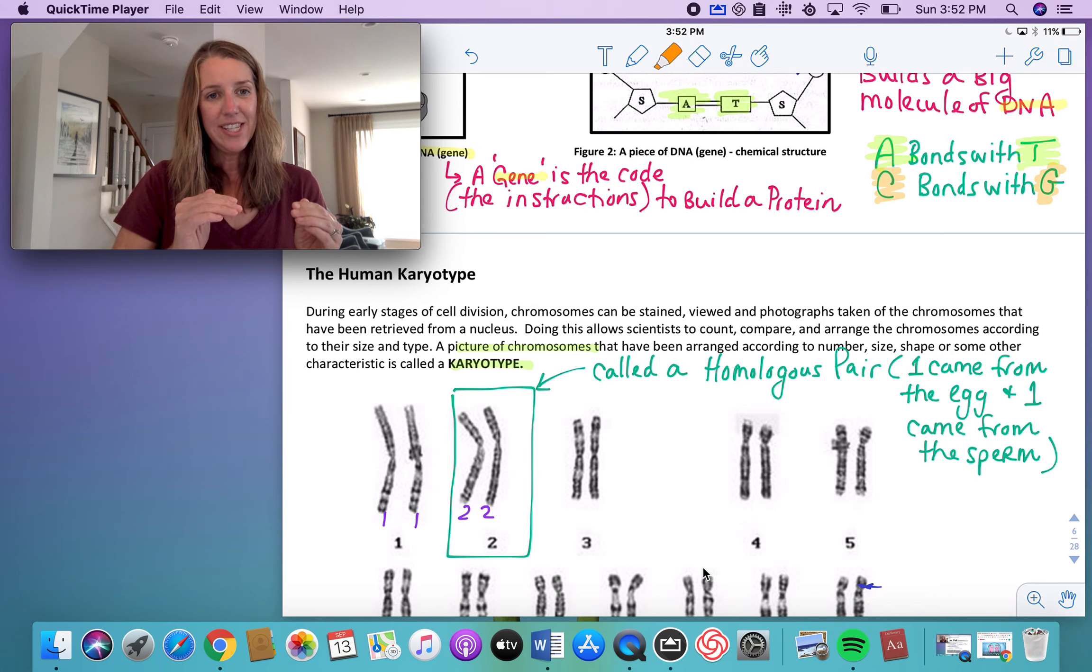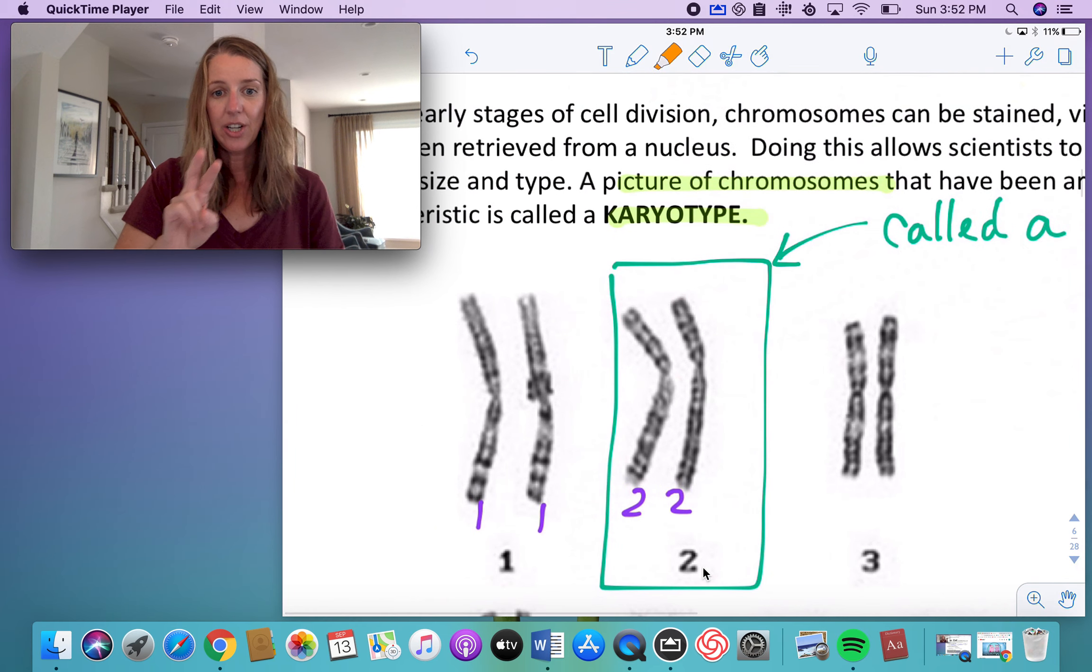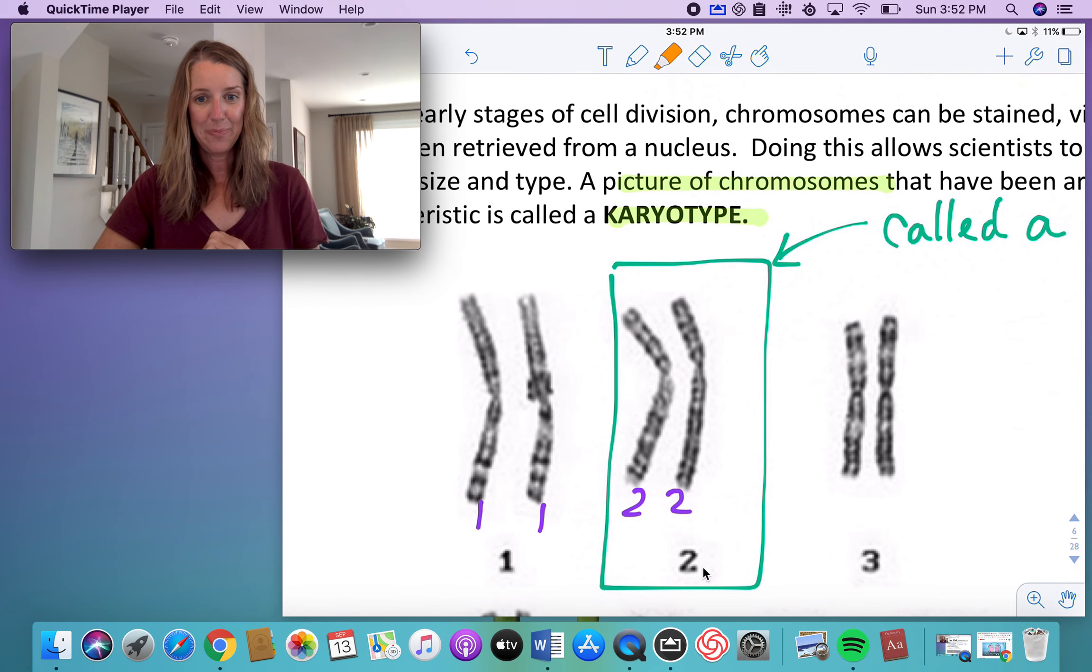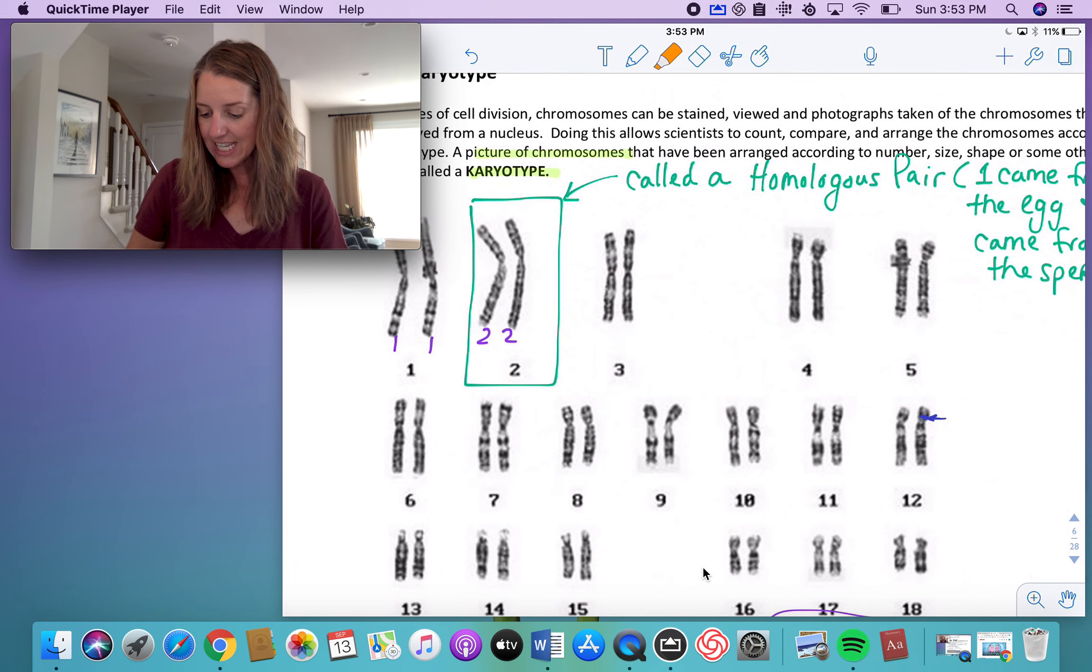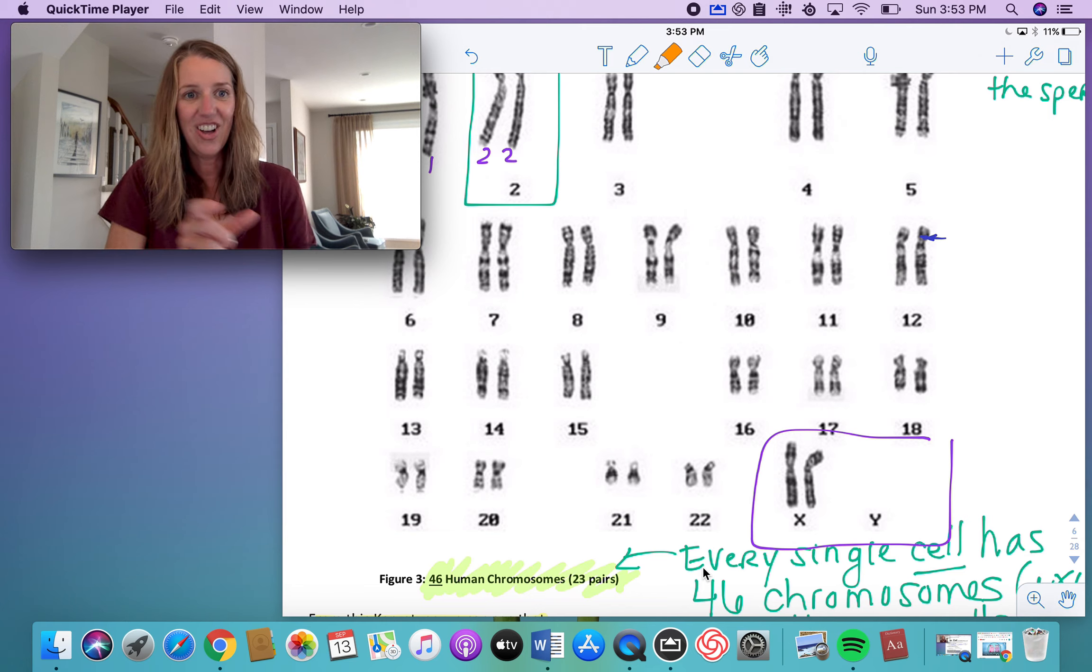You have 23 pairs of chromosomes. And here's how it works. You actually have two of each number chromosome. You have two chromosome number ones, you have two chromosome number twos, two chromosome number threes. And can you see all the way down into the 23rd pair? And that represents the sex chromosomes. So I'll get to that in just a second.